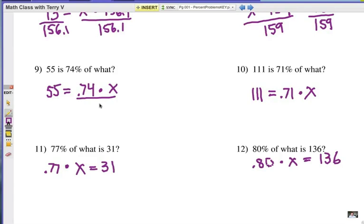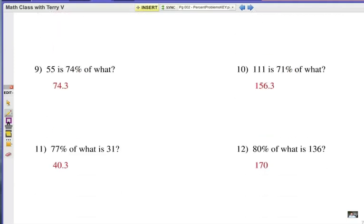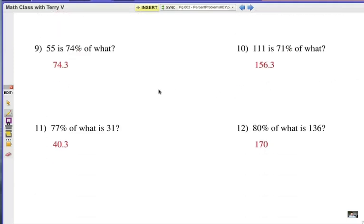You're going to divide both sides by 0.74. Divide both sides by 0.71. Divide both sides here by 0.77, and divide both sides here by 0.8 or 0.80. Alright, final check of the answers. How did you do? Take a look.